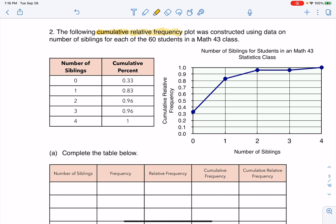But I've got a cumulative relative frequency plot that was constructed using data on number of siblings. Here's my variable, my discrete numerical variable, for each of 60 students in a math 43 class. So this is my sample size right here. And here I can see I've got my variable number of siblings. It looks like my spread is zero to four. And I've got my cumulative percentages here.